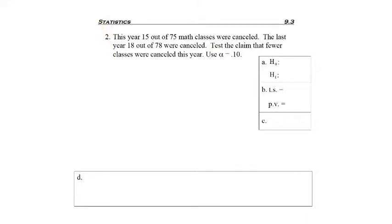Problem number two. This year, 15 out of 75 math classes were canceled. Last year, 18 out of 78 were canceled. Test the claim that fewer classes were canceled this year. Use alpha equals 0.10.